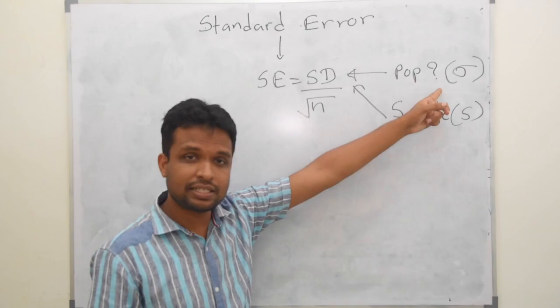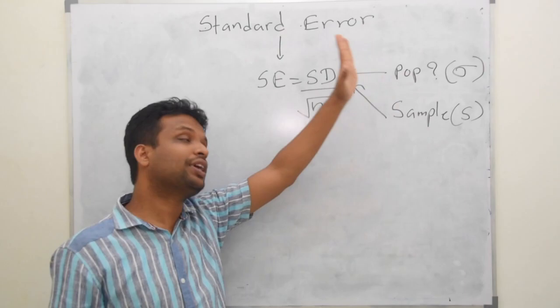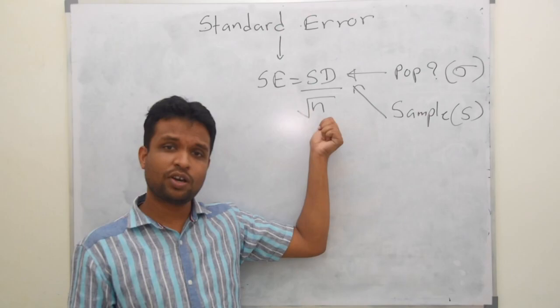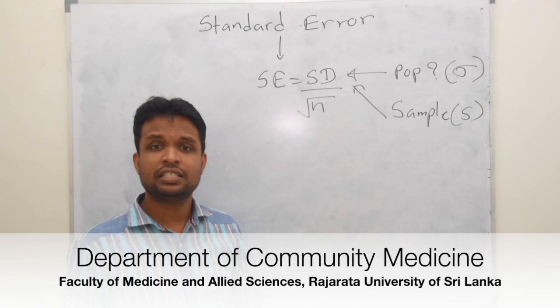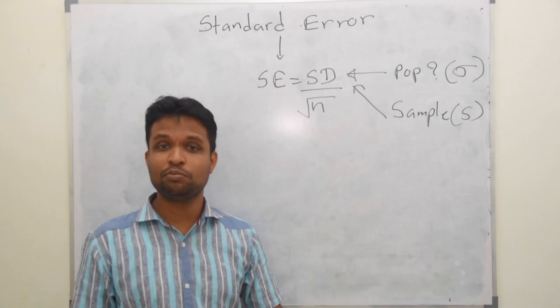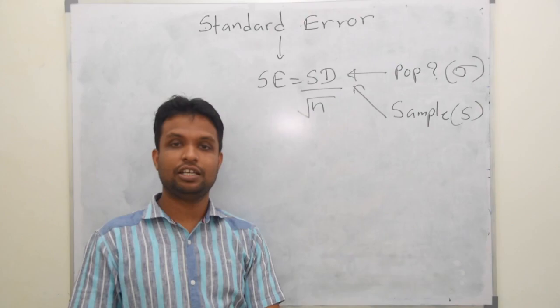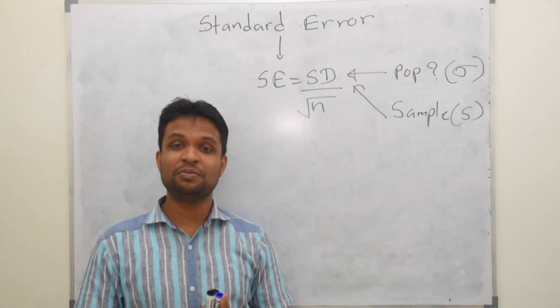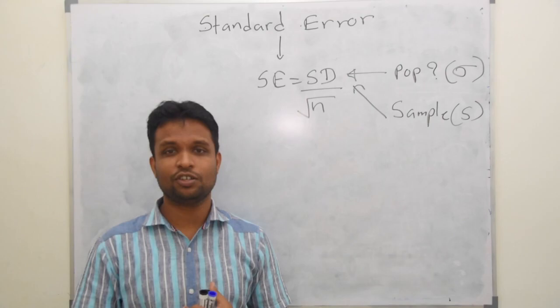Let's discuss whether we need population standard deviation or sample standard deviation to calculate standard error. We know the formula: standard error equals standard deviation divided by the square root of n. In general, it is population standard deviation — even in my previous lecture, I mentioned that. If you read textbooks, you will identify that it is population standard deviation. But in actual situations, most of the time, we don't know the population standard deviation, and in such cases, we can use sample standard deviation also.